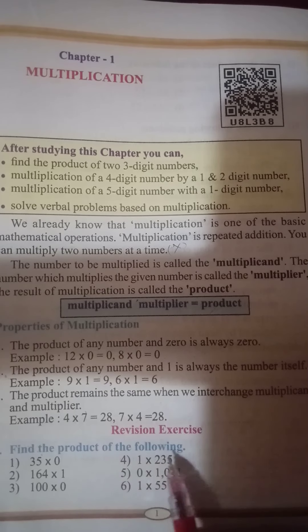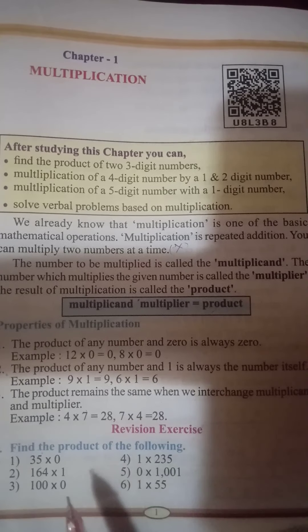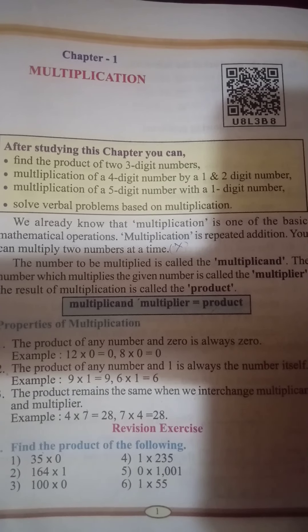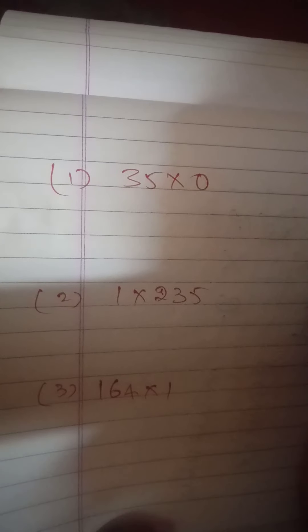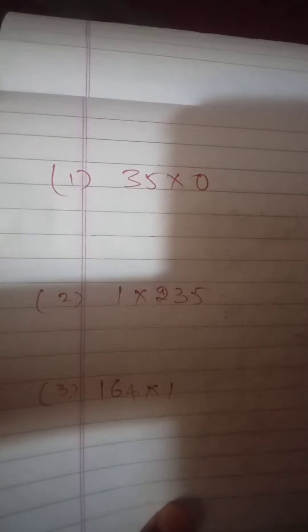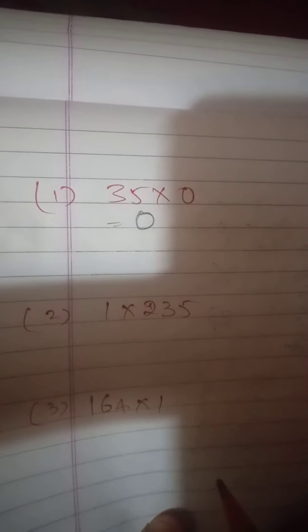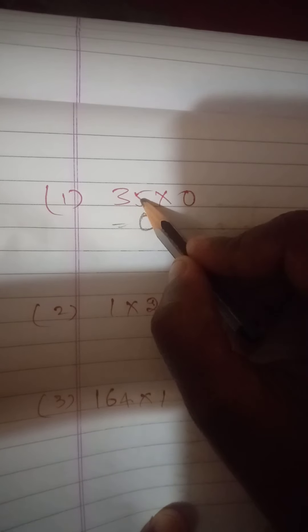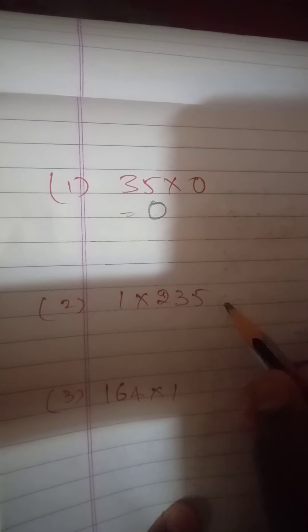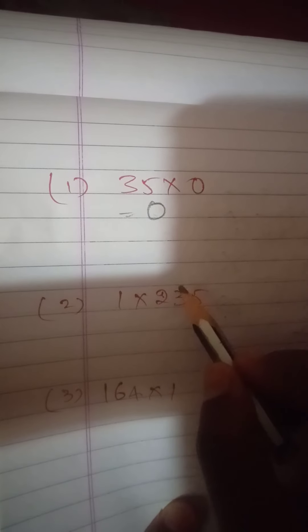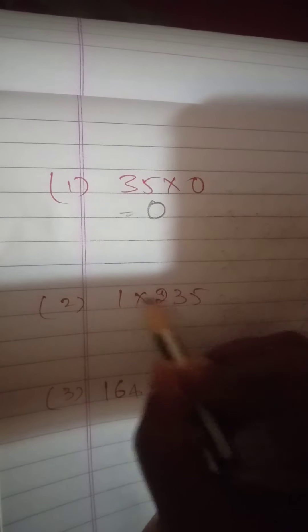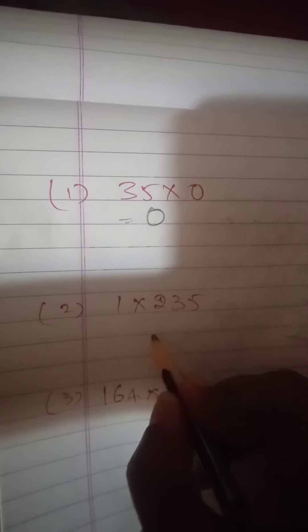Revision Exercise: Find the product of the following. First question: 35 into 0 is 0 — this is the first property, the product of any number and 0 is always 0. Second question: 1 into 235 — by the second property, the product of any number and 1 is always itself, so 1 into 235 is 235.